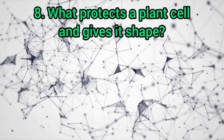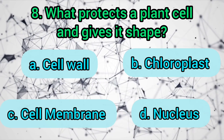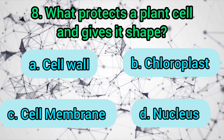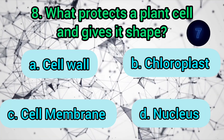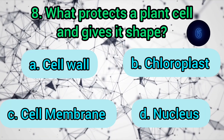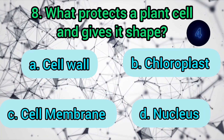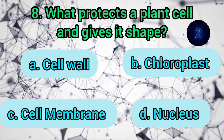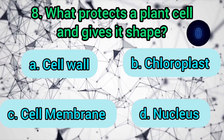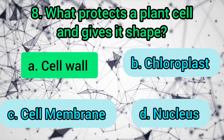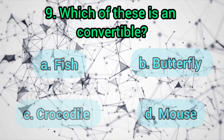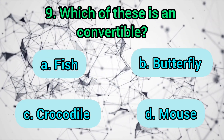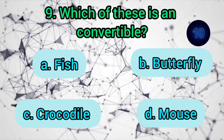Which part of the plant absorbs water and nutrients? Stem, flowers, fruit, or leaves? The answer is: roots. What protects a plant cell and gives it shape? Cell wall, chloroplast, cell membrane, or nucleus? The answer is: cell wall.